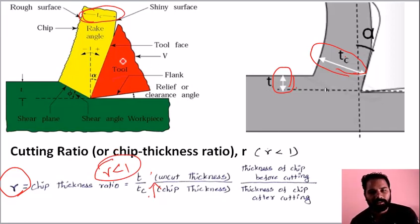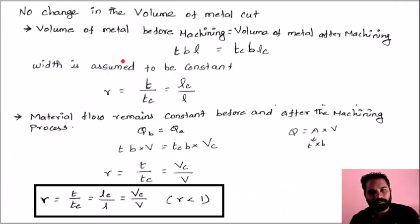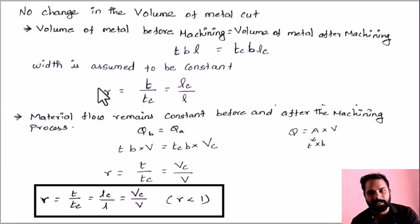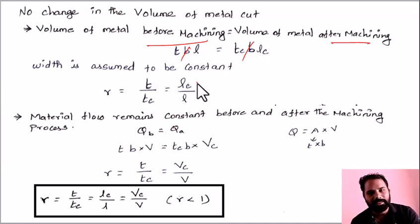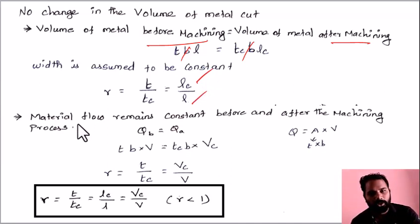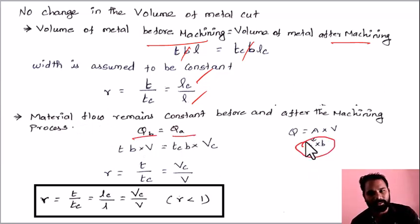Using the velocity triangle, the chip thickness ratio can also be expressed in terms of length and velocity. Volume of metal before machining equals volume of metal after machining. Since width is constant, T divided by Tc equals Lc divided by L, where Lc is the chip length and L is the length of cut. Material flow Q is constant; Q equals area into velocity, and area equals thickness into breadth.